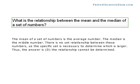What is the relationship between the mean and the median of a set of numbers? The mean of a set of numbers is the average number. The median is the middle number. There is no set relationship between these numbers, so the specific set is necessary to determine which is larger. Thus, the answer is D, the relationship cannot be determined.